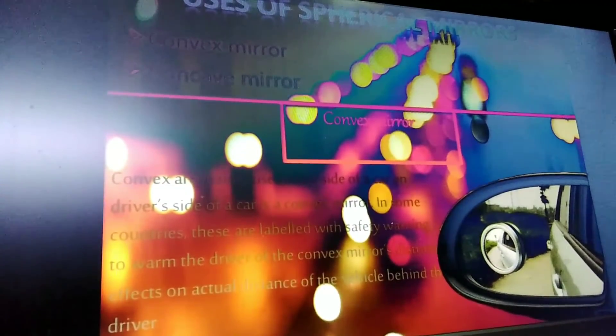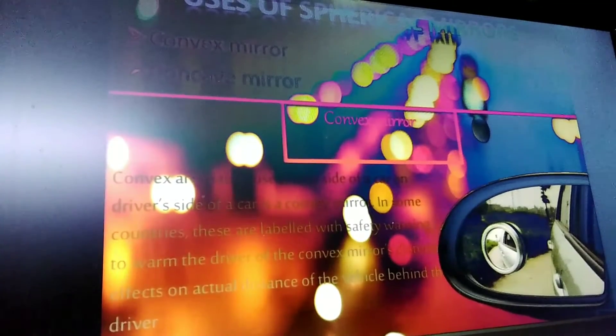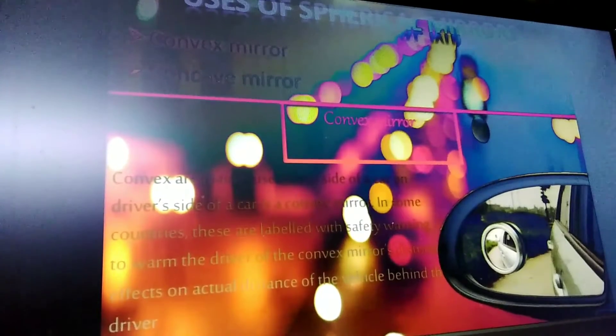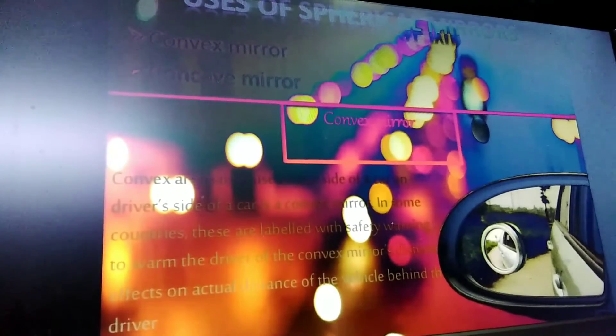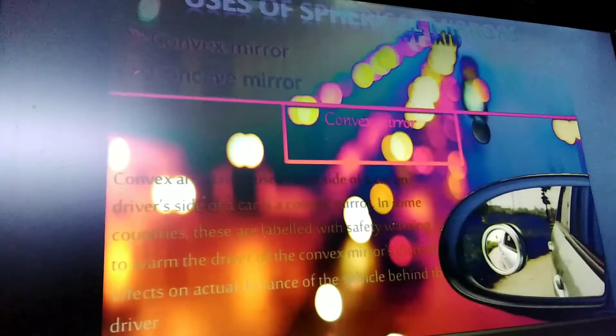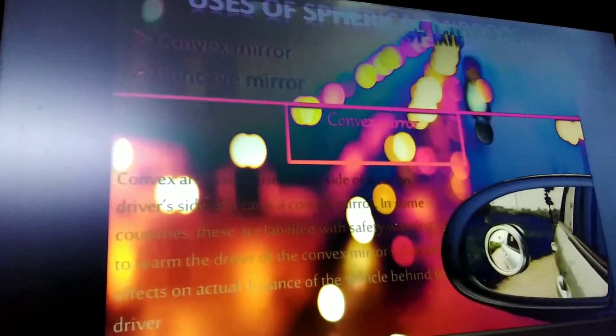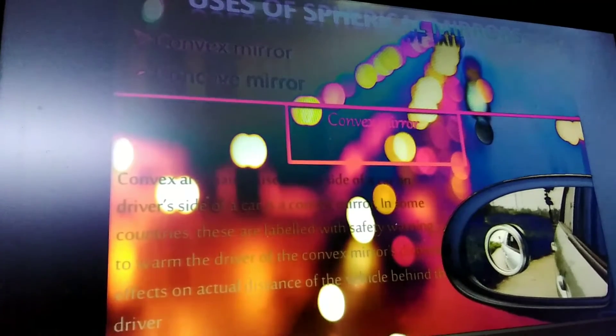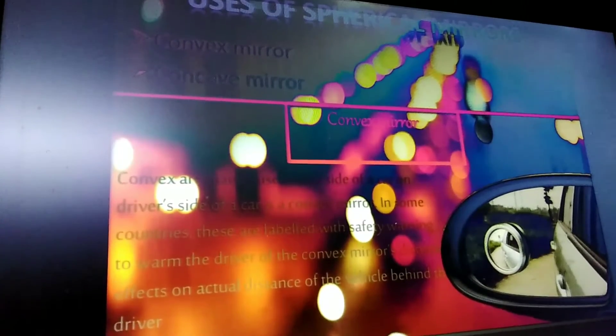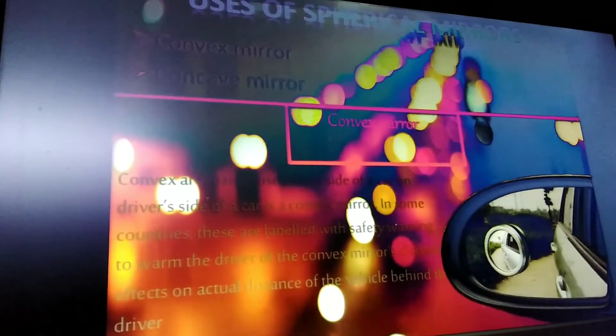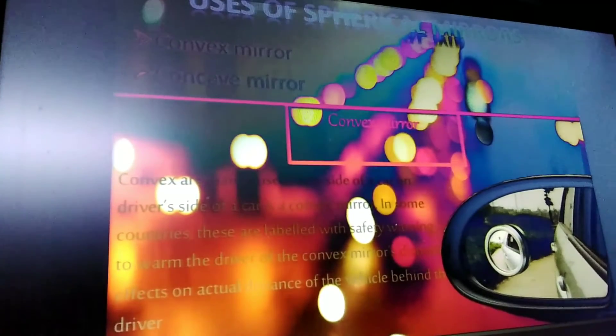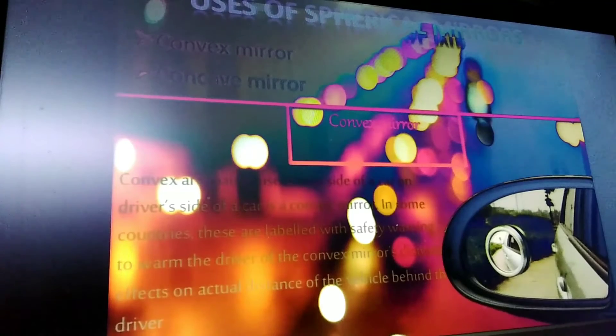Convex mirrors are used mainly as rear-view or side-view mirrors in vehicles because they cover a wide area and always form virtual, erect, diminished, clear images. This allows the driver to be warned about vehicles behind and assess their distance for safety.